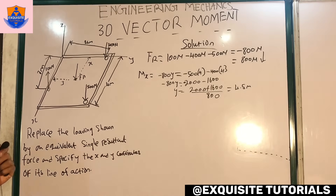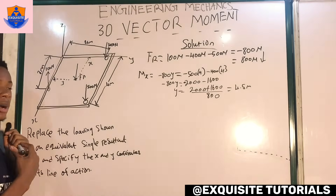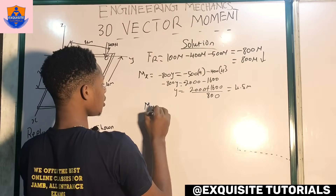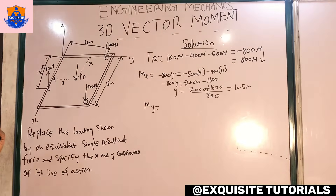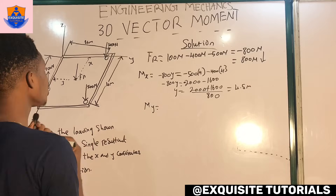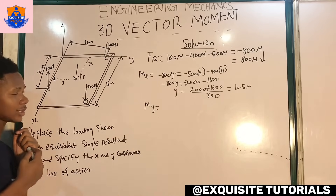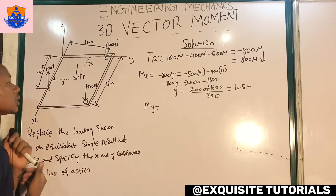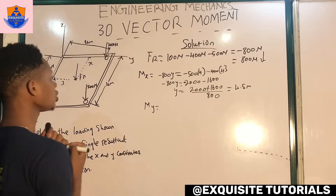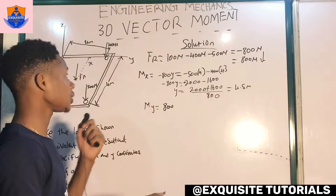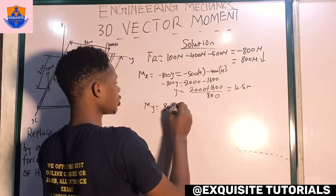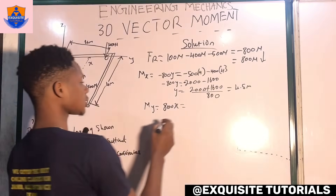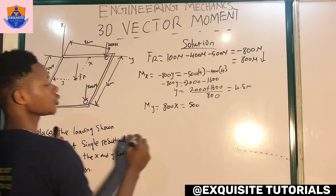To get the value of x, take moments about the y-axis. Taking moments about x gives y; taking moments about y gives x. The resultant force going into the plane now produces a positive moment about the y-axis. So we have 800x equals the sum of moments from the other forces. The 500 newton force going into the plane produces a positive moment: 500 times 4 meters. The distance remains 4 meters.